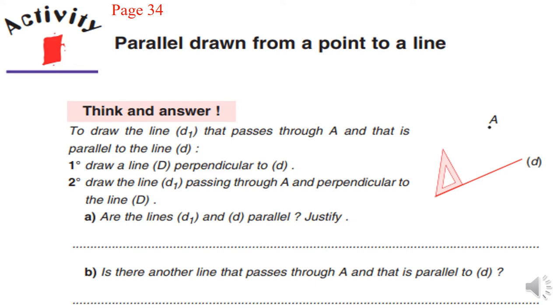Now, let's solve together activity I, page 34. Parallel drawn from a point to a line. Think and answer. To draw the line (d1) that passes through A and that is parallel to the line (d), we have two steps to do. The first one, we have to draw a line (D) perpendicular to (d).